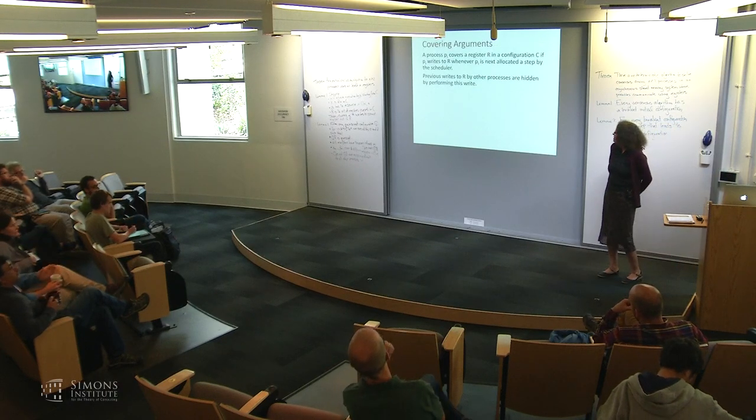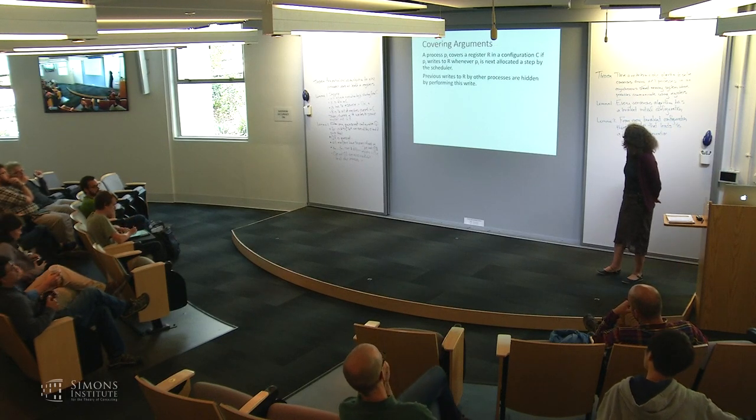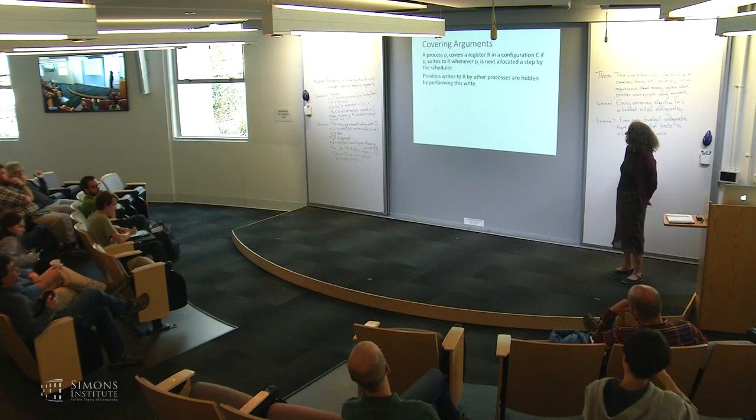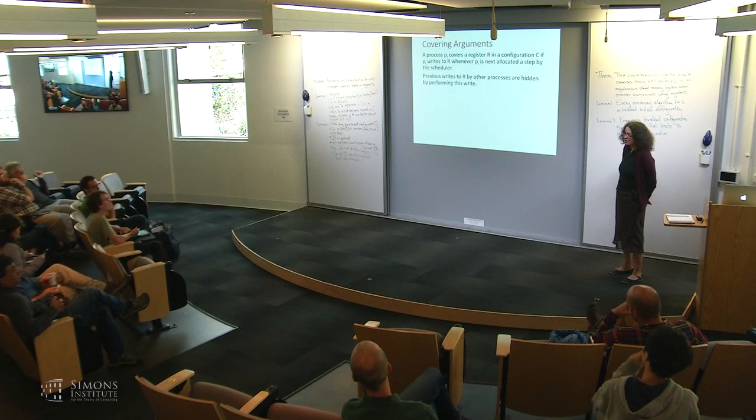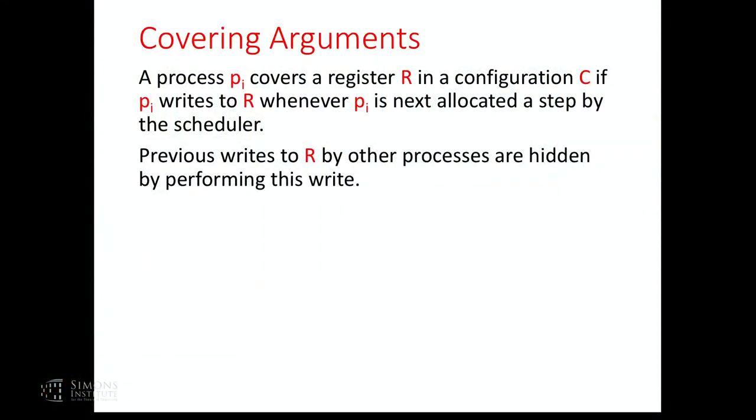I first want to define what covering means. A process PI is said to cover a register R in a configuration C if PI writes to R whenever PI is next allocated a step by the scheduler, and the result of that write basically hides previous writes to R by other processes.